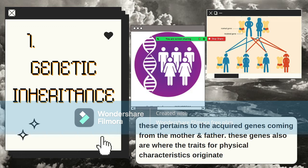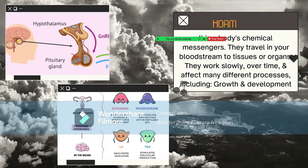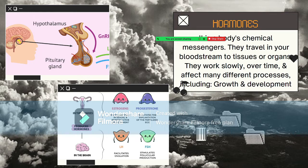The second factor is hormones. Hormones are the body's chemical messengers that travel through the bloodstream to tissues or organs. They work slowly over time and affect many different processes, including growth and development. Much of the human body responds to different kinds of hormones, which enable timely physical growth and development of body parts. Hormonal imbalance may have a delaying effect on child development.